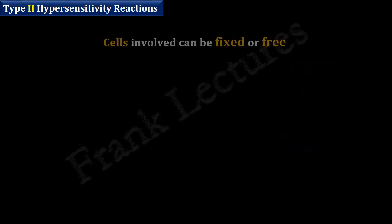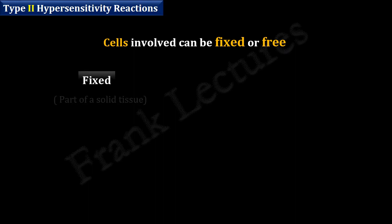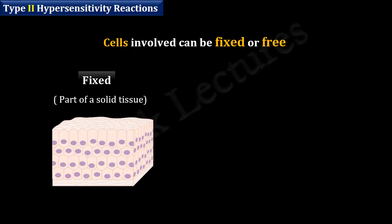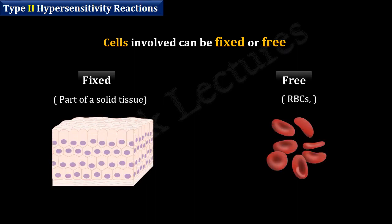The cells on which these antigens are present can be fixed or free. By fixed, we mean the cells involved are part of a solid tissue. Free cells include red blood cells and leukocytes.